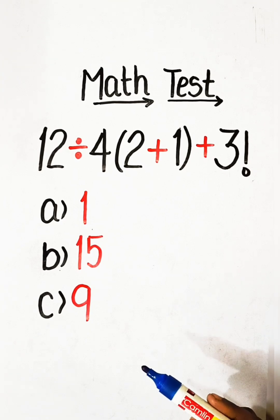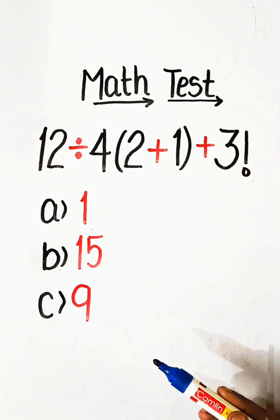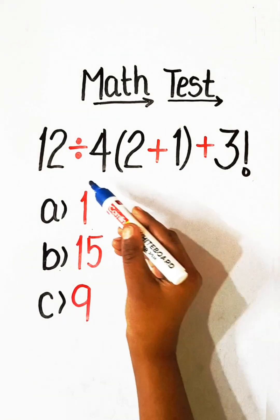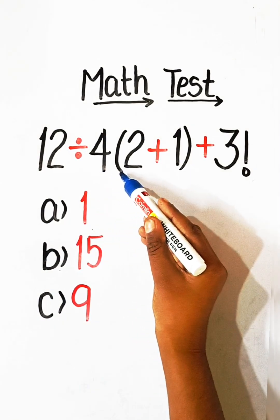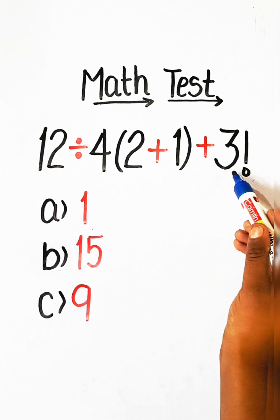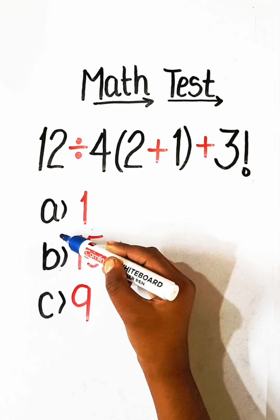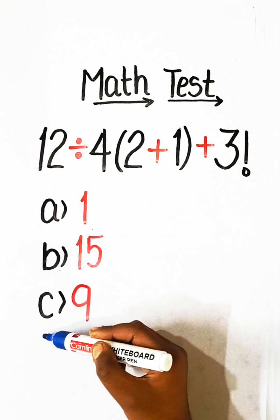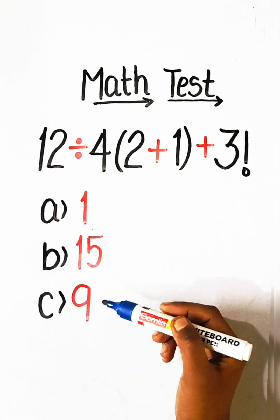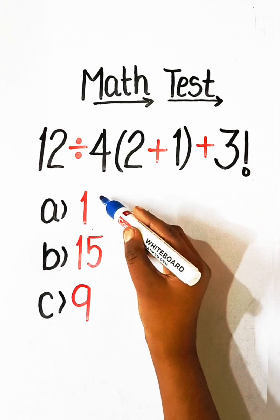Hello everyone, welcome back to my YouTube channel. In this video we will solve this basic math problem: 12 divided by 4 under bracket 2 plus 1, plus 3 factorial, equals to what. Option A: 1, Option B: 15, Option C: 9. So let's solve this.